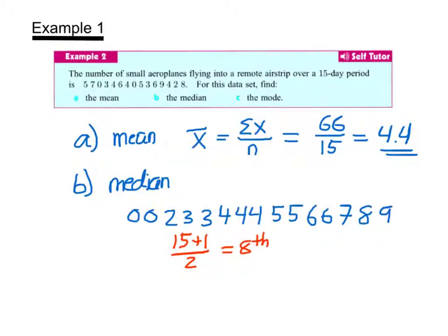I'm going to count in 8 values from the left: 1, 2, 3, 4, 5, 6, 7, 8. So 4 is the 8th data value, and that is my median. I can check that because this is an odd number data set and I should have the same number of data values on either side, which I do. I have 7 over here and 7 over here.